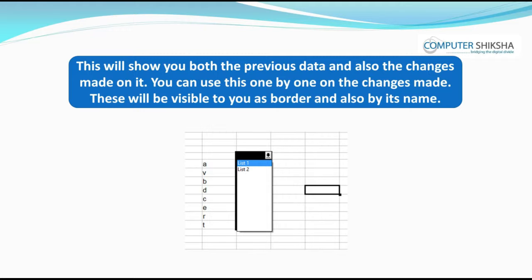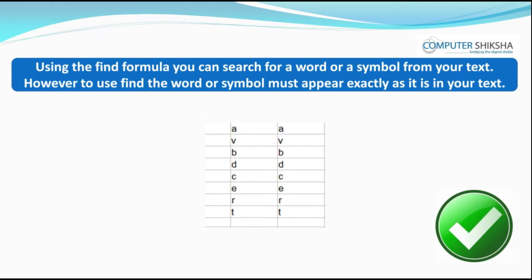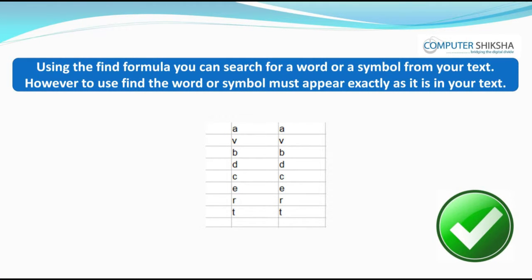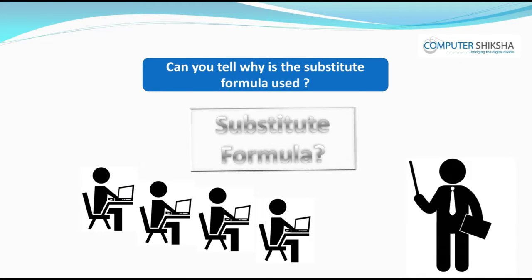These will be visible to you as a border and also by its name. Can you tell about the differences between Find and Search formulas? Using the Find formula, you can search for a word or a symbol from your text. However, the word or symbol must appear exactly as it is in your text. With the Search formula, you can look for any word or symbol in your text, even if its case does not match — the Search formula is not case sensitive, so you can write the word in small letters, capitals, or a mix.